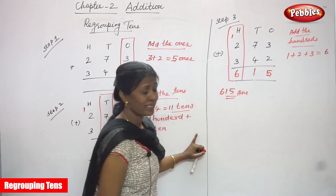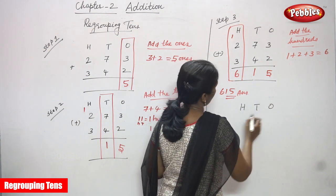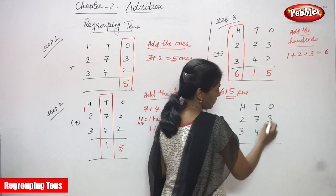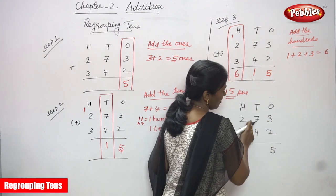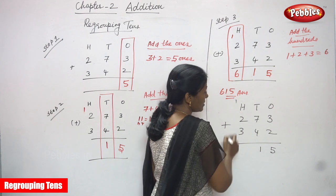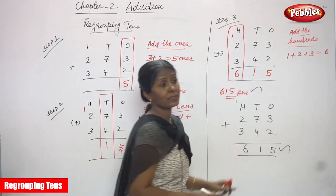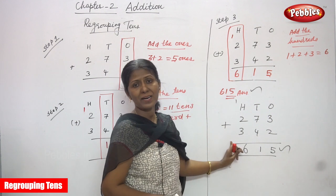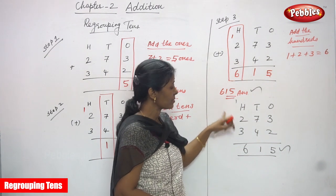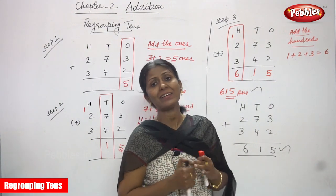The total answer is six hundred and fifteen. This is also correct using normal addition: 273 plus 342 — ones: three plus two is five; tens: seven plus four is eleven, write one and carry one; hundreds: two plus one plus three is six. Both methods give the same answer: 615. Both are correct and similar.